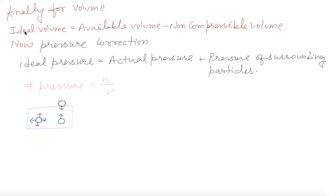Now finally for the volume, ideal volume is equal to available volume minus non-compressible volume. And now for pressure correction, ideal pressure is equal to actual pressure plus pressure of the surrounding particles. And pressure will depend upon the number of particles per unit of volume.